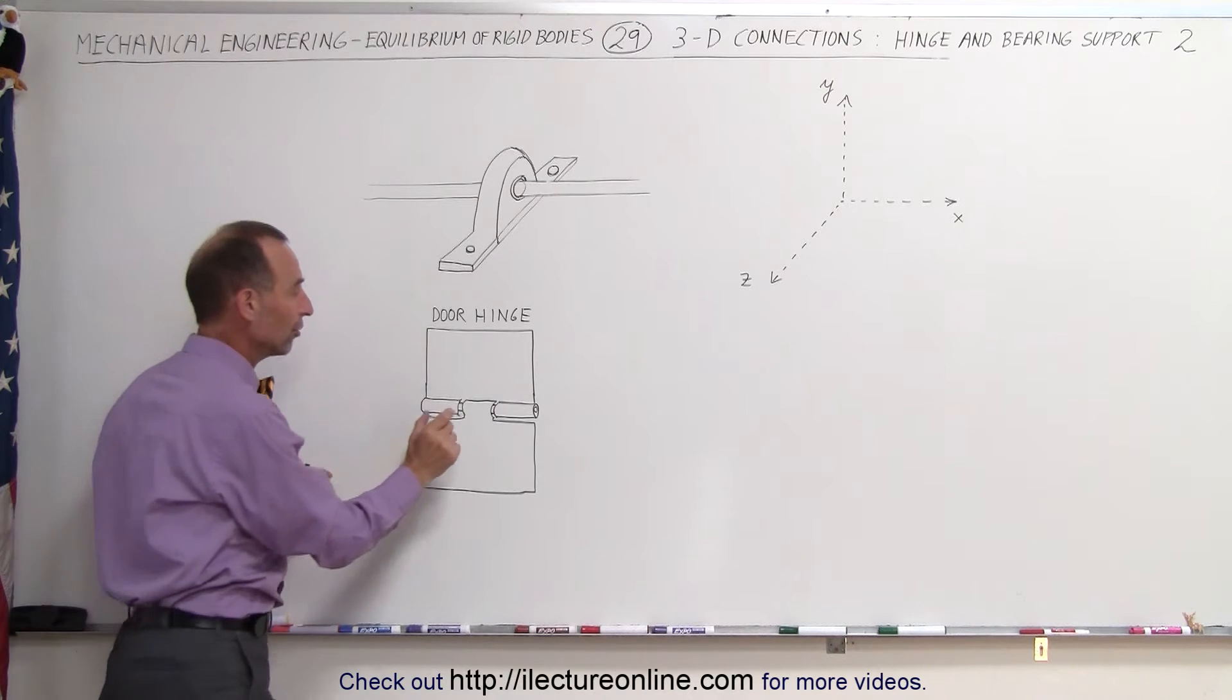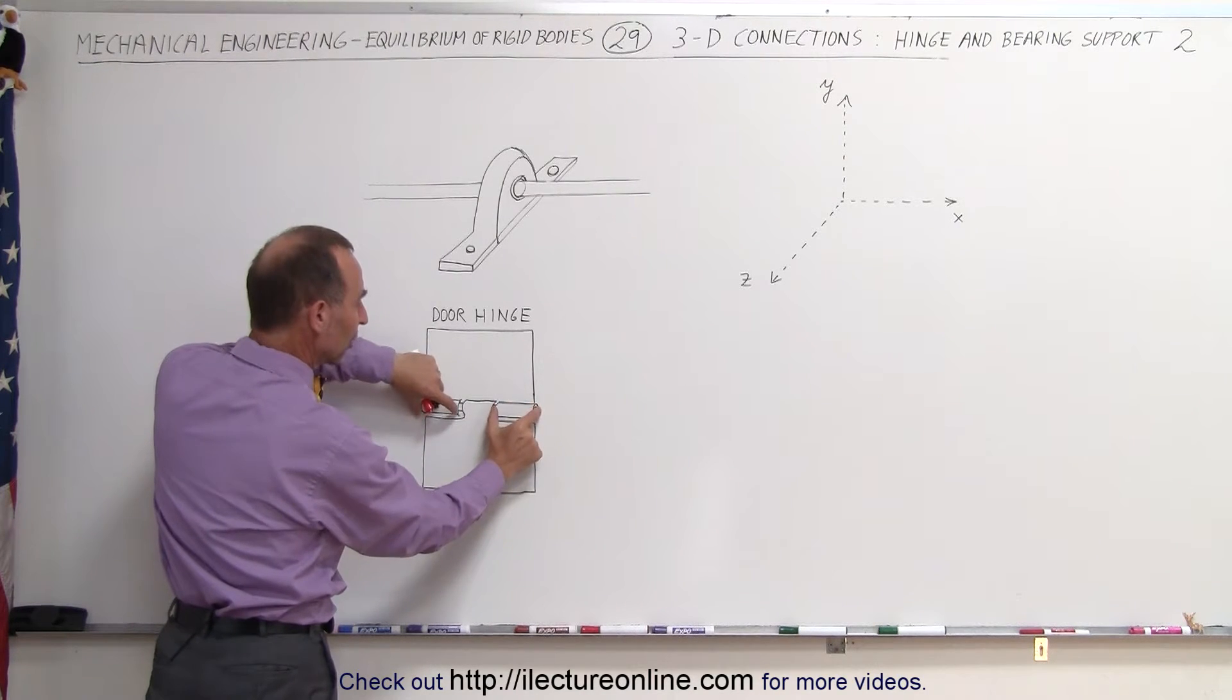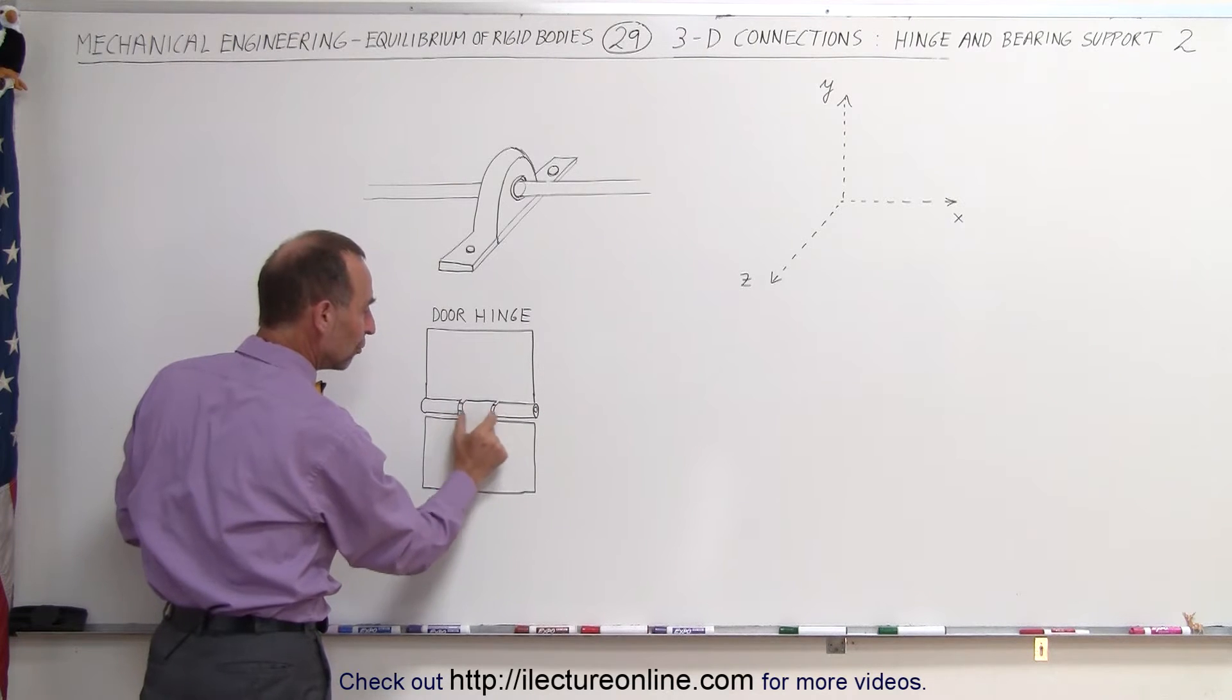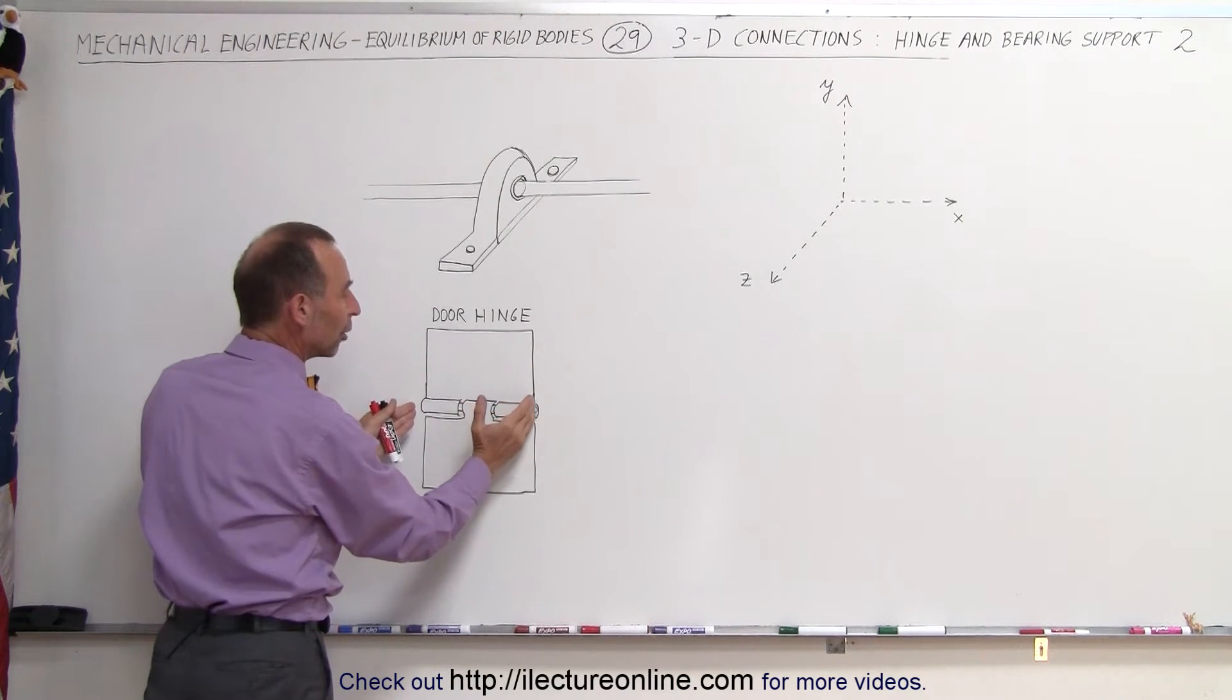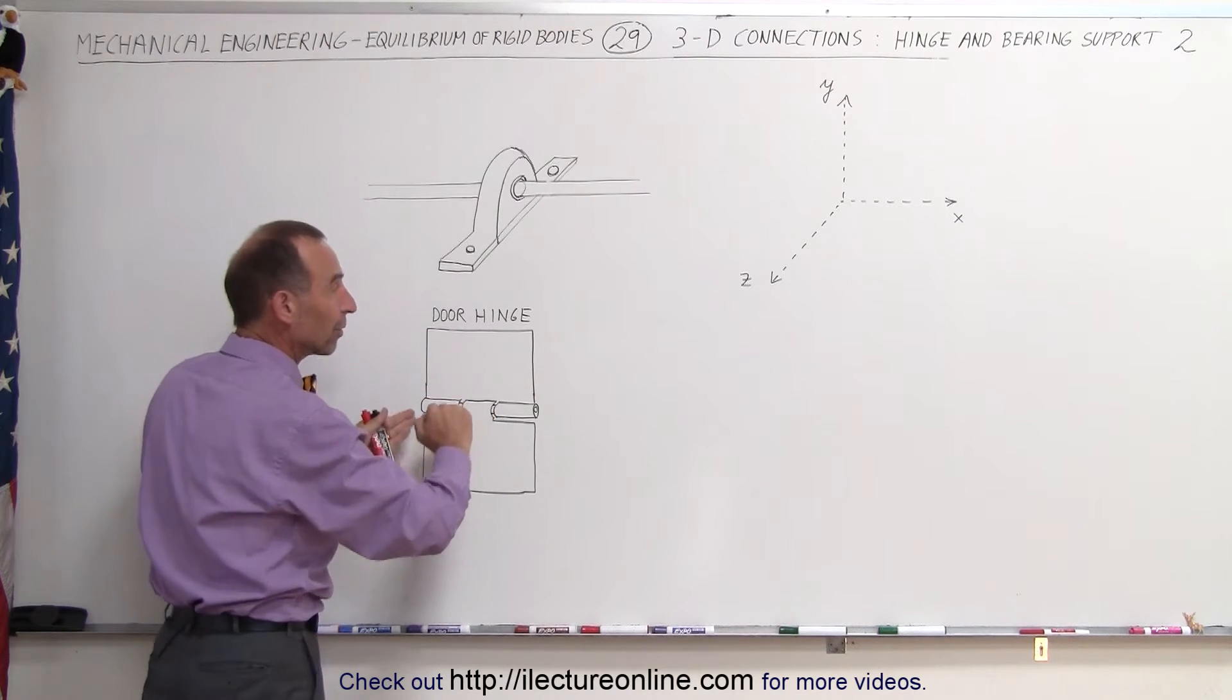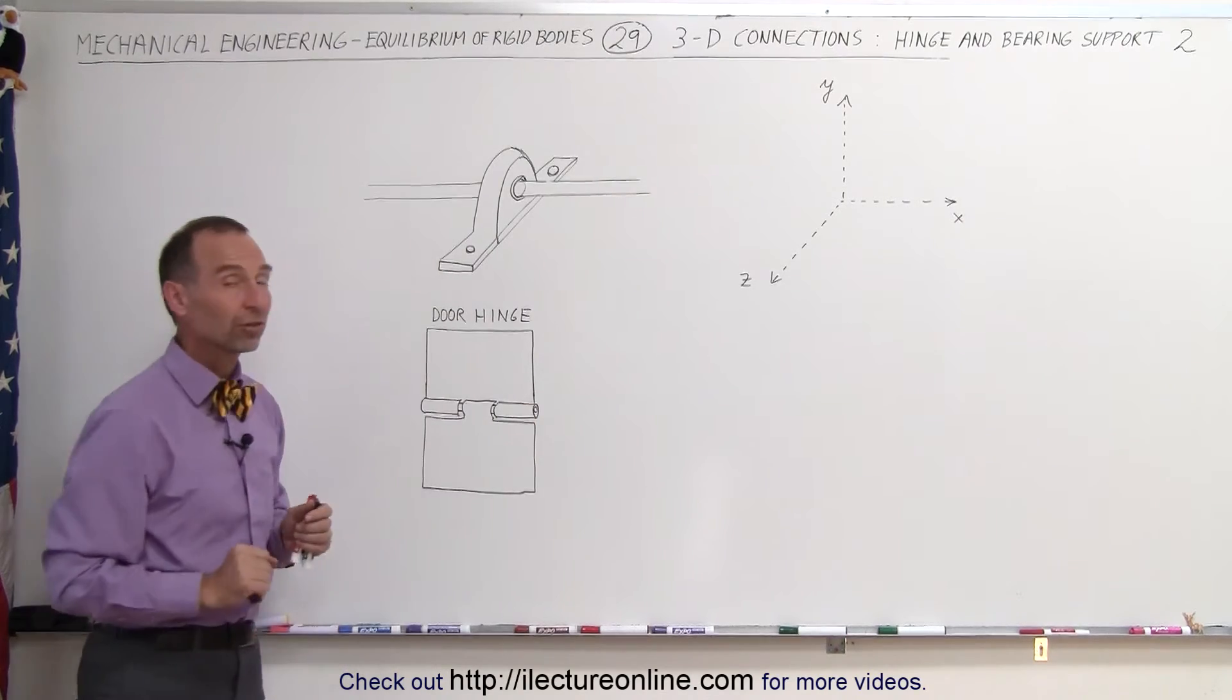Just like with a door hinge, notice that the two supports of the top part of the hinge here prevents the bottom hinge to move back and forth like this so it's locked into place and so we have what we call an additional force created in the X direction that we did not have in the previous video when we did not have constraint in that direction.